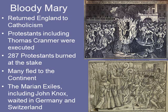This is Bloody Mary. This slide deals with how she handled things back at home. She returned England to Catholicism. The Protestants, including Thomas Cranmer, were executed. The bottom illustration is the death of Thomas Cranmer, and the top is the death of another Protestant leader she felt needed to be made an example of. 287 Protestants were burned at the stake — this is why she is called Bloody Mary.